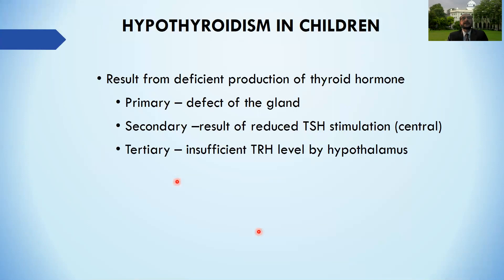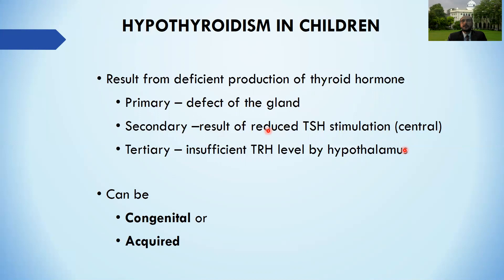Hypothyroidism results from deficiency of thyroid hormones, which can occur due to a defect at the thyroid gland level - primary hypothyroidism - or reduced TSH stimulation - secondary hypothyroidism (also called central hypothyroidism) - or insufficient TRH from the hypothalamus - tertiary hypothyroidism. This can be both congenital and acquired. Congenital hypothyroidism is very important as thyroid hormone plays a critical role in brain development.